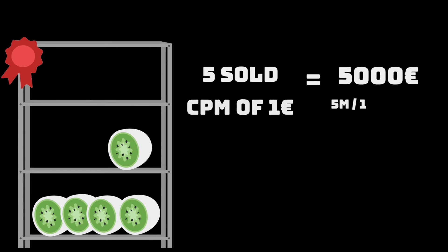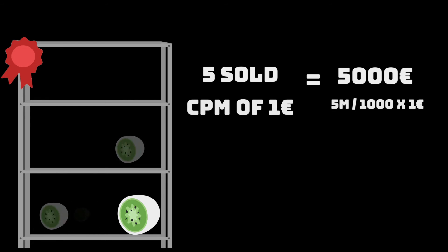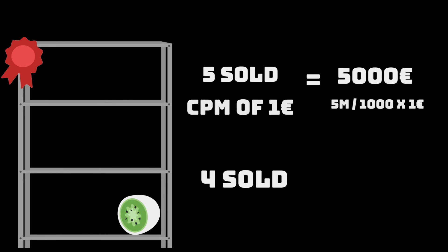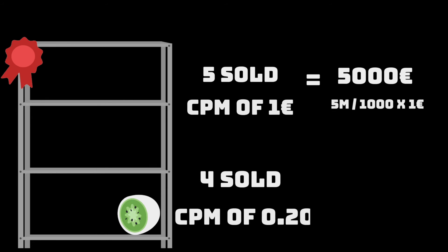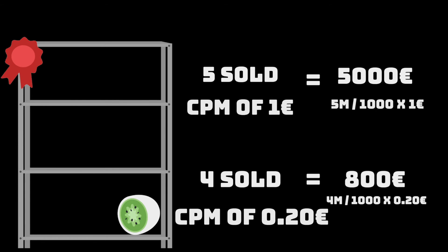Since your Kiwis are the best in town, you sold the first five almost immediately for the CPM of one euro. This gave you revenue of 5,000 euros. Then you sold four more Kiwis for the CPM of 0.2 euros, which gave you revenue of 800 euros.